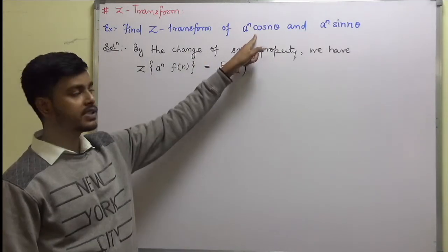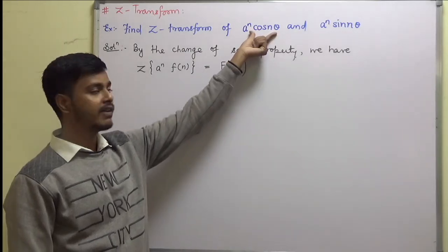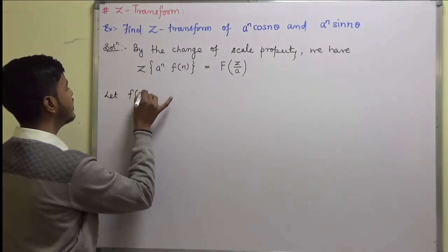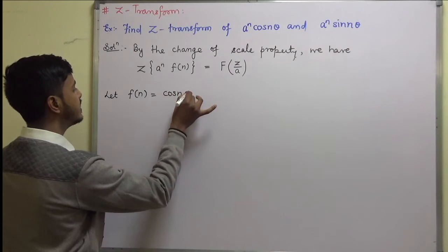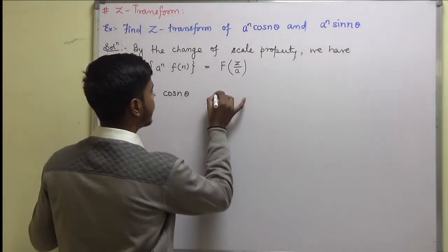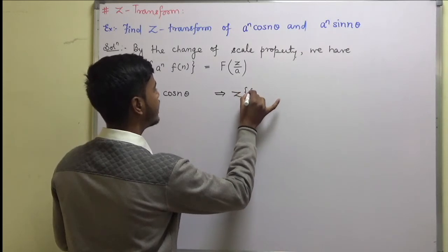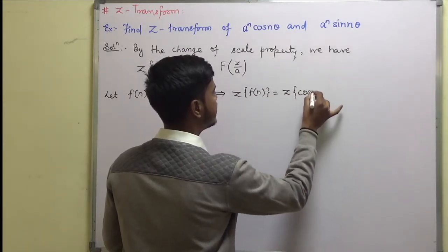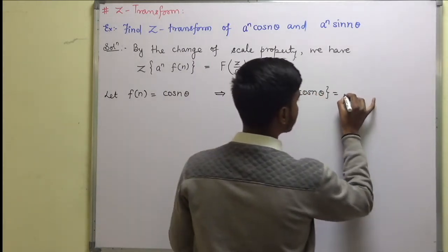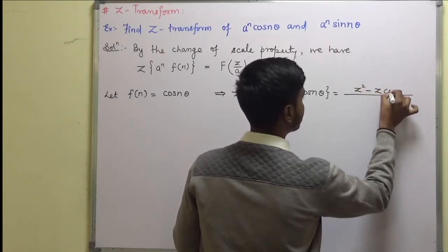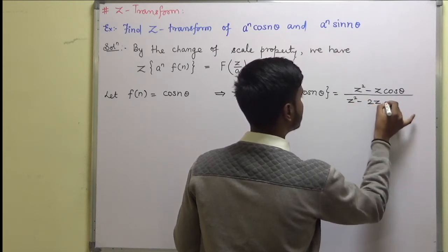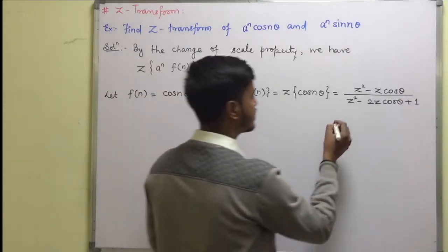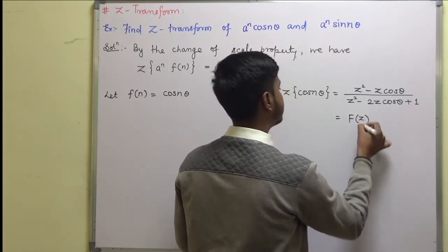Now if you compare this with the first one, we have f of n is equal to cosine n theta. So what is the Z transform of f of n? The Z transform of cosine n theta is z squared minus z cosine theta, upon z squared minus 2z cosine theta plus 1. And we denote this by F of z.